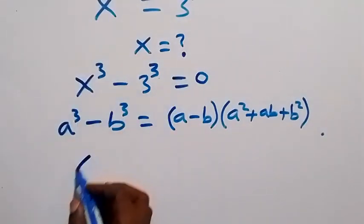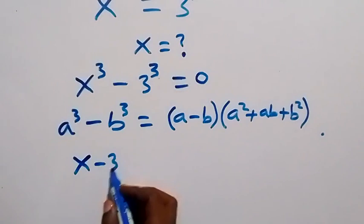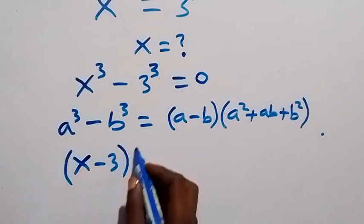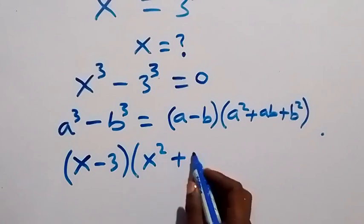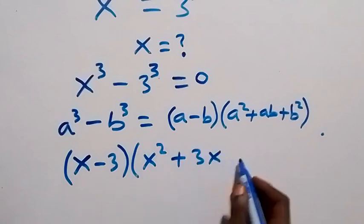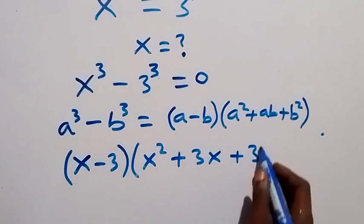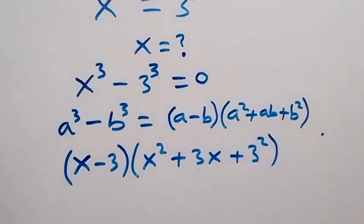(x - 3) into bracket (x² + 3x + 3²), which is equals to 0.